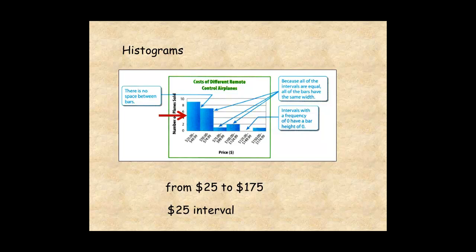The height of each bar indicates how many prices fall within that interval. For example, nine prices fall within the $25 to $50 interval. Only one price falls between the $150 and $175 interval.